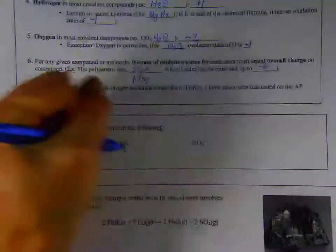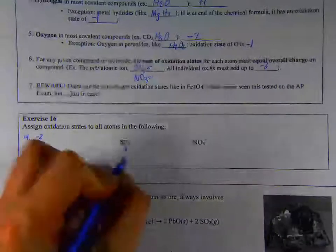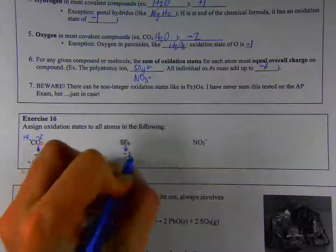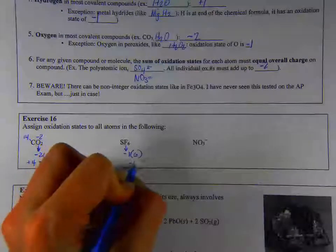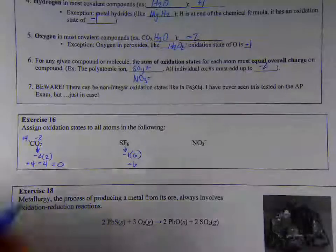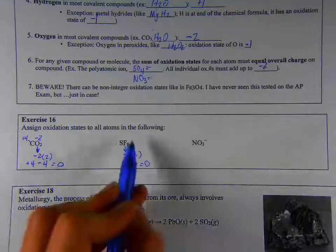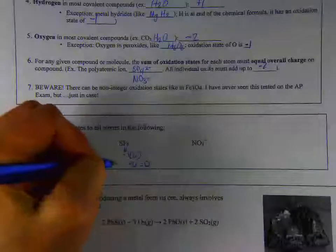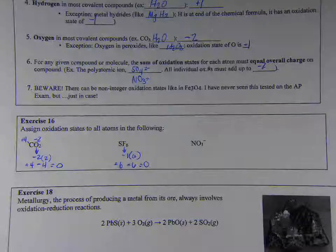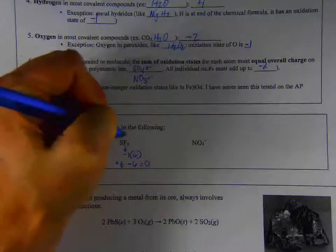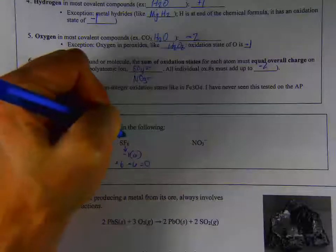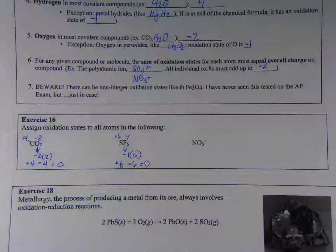For SF6, the fluorines from our rules above have an oxidation state of negative one, but there are six of them. So in total, I got negative six right now. If I want all this stuff to add up to zero, because there's no charge on the molecule, sulfur must be a positive six. So sulfur has an oxidation state of plus six. Fluorine has an oxidation state, each one of them, of minus one.